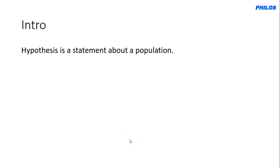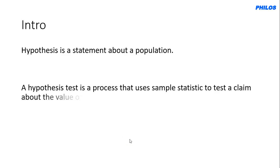Hypothesis testing is a process that uses sample statistics to test a claim about the value of a population parameter. For instance, IC Carb company claims that the average sugar content in each IC Carb is not more than two milligrams. A scientist will never believe something unless there is proof. So you take a sample of 10 IC Carbs, measure the sugar content in each, find the average, allow some level of error, and check if there's any significant difference between your average and the average in their claim.